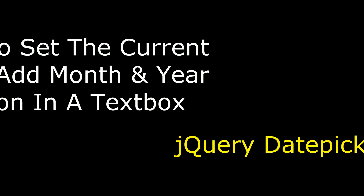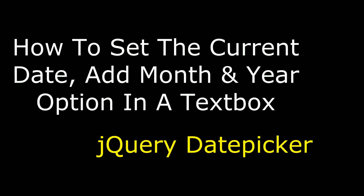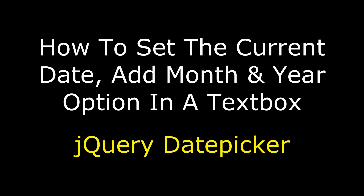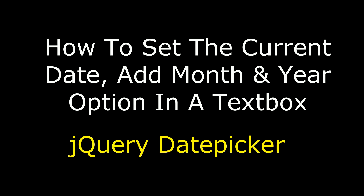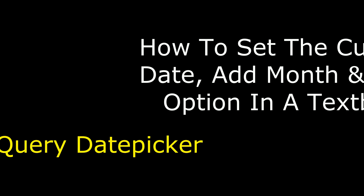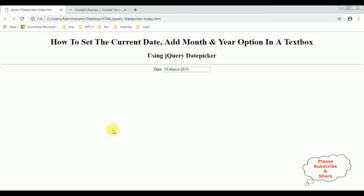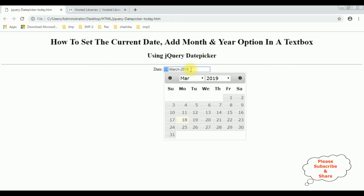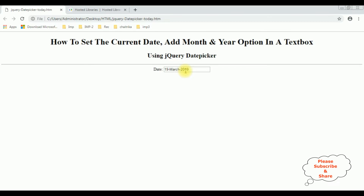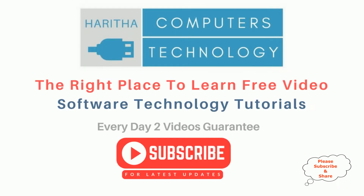Hello friends, welcome to my channel. This is Cheren. In this video I will show you in a jQuery date picker how to set the current date and add the options month and year in a textbox control. Before reloading the browser, notice the current format of the date is month, date, and year. Now I'm reloading the browser — see here: 18th March 2019, 19th March 2019. If you are a first time visitor to my channel, please subscribe to get the latest updates.